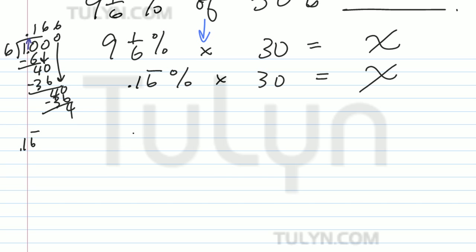Let's rewrite this. So it's 9 and 16 hundredths with this bar over the 6 percent times 30. Instead of having to deal with the bar, just go ahead and reduce this into an improper fraction, it'll be much easier.